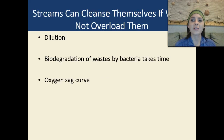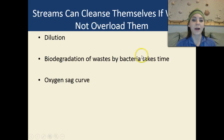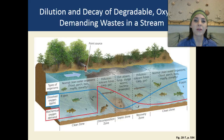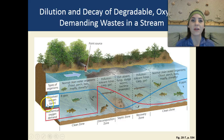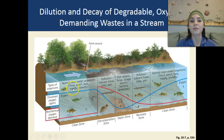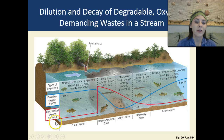Streams can cleanse themselves if we don't overload them. They do this through dilution and biodegradation of wastes by bacteria. However, it does take time, and you also see an oxygen sag curve. Looking at this graphic, we have types of organisms indigenous to the environment when the water is clean — normal clean water organisms such as trout, perch, bass, mayfly, and stonefly. The dissolved oxygen is approximately 8 parts per million, and we have a very low biochemical oxygen demand.